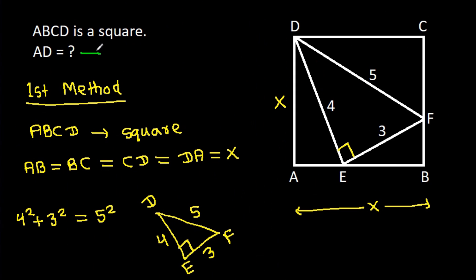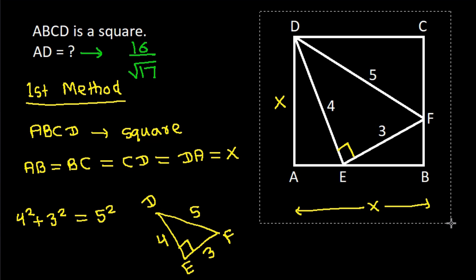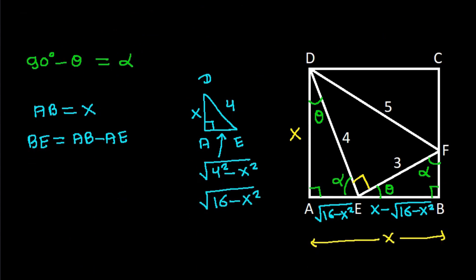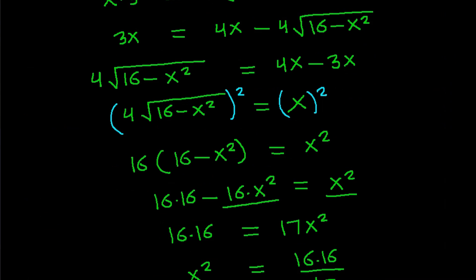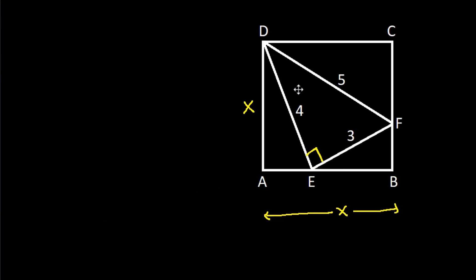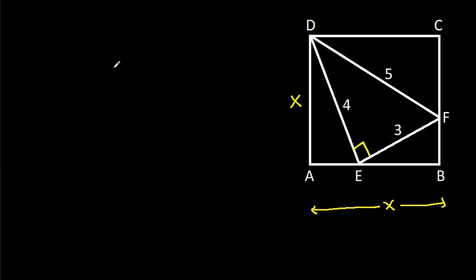So X² equals 16 by square root of 17, meaning AD equals 16 by square root of 17.